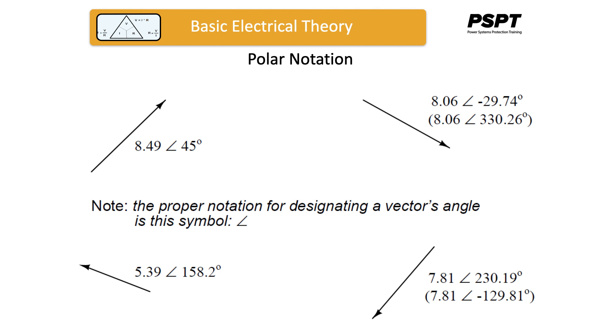The phasor in the bottom right hand corner, you can designate that in one of two ways using polar notation. One is, they both have the same magnitude, 7.81, but you can describe the angle as 230.19 degrees or you can describe the angle as minus 129.81 degrees.